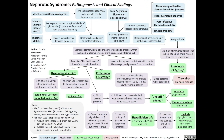Loss of albumin through the urine means a reduced level of albumin in the bloodstream — a condition known as hypoalbuminemia. Since 50% of serum calcium is albumin-bound, the total serum calcium will be reduced. Remember that total serum calcium does not reflect ionized (free) calcium levels, which is the biologically active form. We should add 0.02 mmol/L to the total calcium for every 10 g/L drop in albumin below 40 g/L.